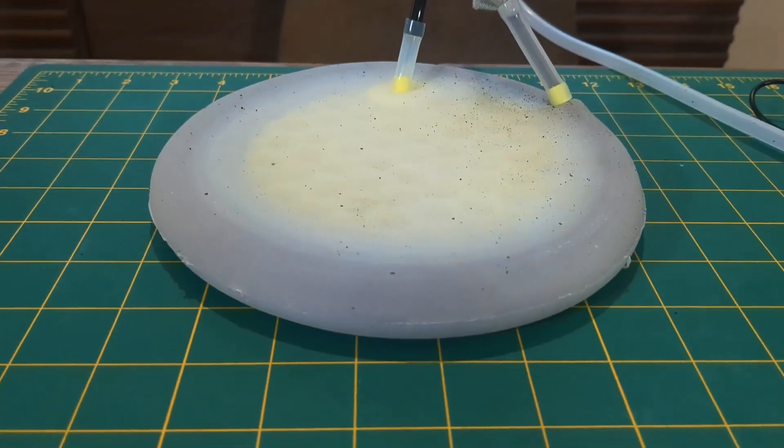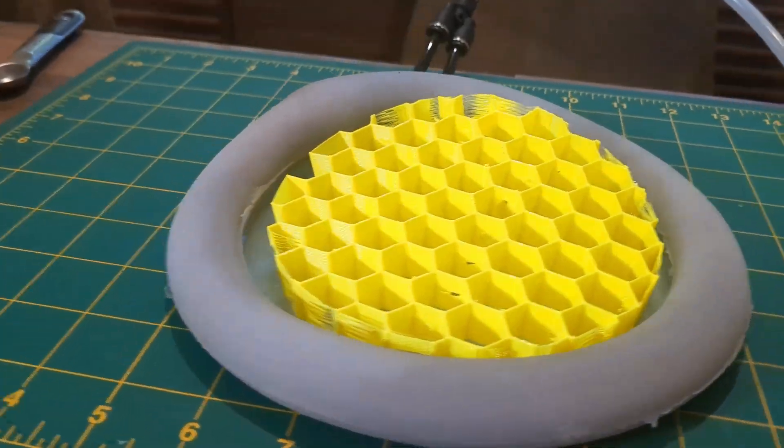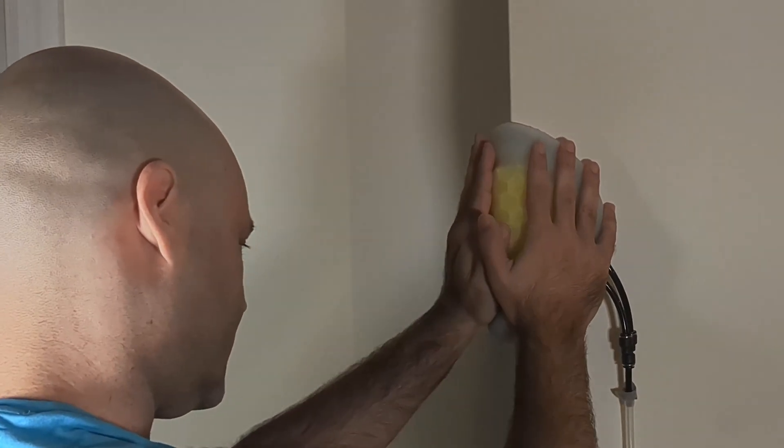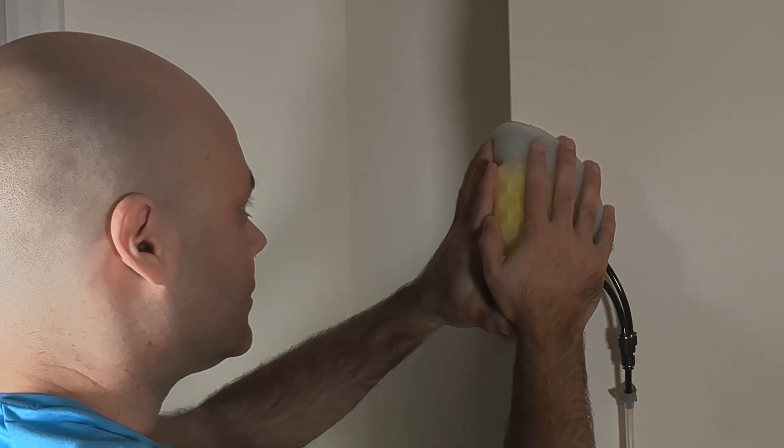This is Gripster, a suction cup designed to grip not just smooth flat surfaces but awkward ones too, like this corner right here. It's taken a lot of trial and error, but let me show you how we got here.